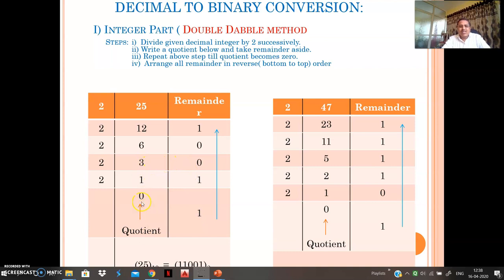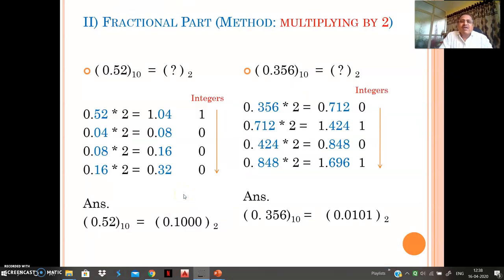Continuing with 25 to binary: 25 ÷ 2 = 12 remainder 1; 12 ÷ 2 = 6 remainder 0; 6 ÷ 2 = 3 remainder 0; 3 ÷ 2 = 1 remainder 1; 1 ÷ 2 = 0 remainder 1. Now rearrange all remainders in reverse order — bottom to top — to get the binary equivalent. You may also practice this with one more example. Next, let's see how to convert the fractional part of a decimal number into binary.